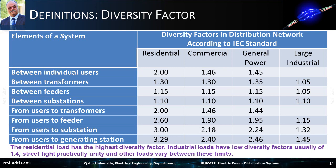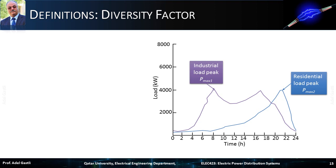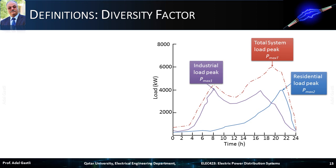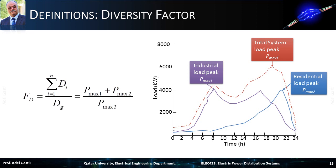Note that the more upstream you go, the higher the diversity factors. The residential load has the highest diversity factor. Industrial loads have low diversity factors, usually around 1.4; street lights are practically unity; and other loads vary between these limits. A graph illustrates different load curves for industrial and residential loads, which exhibit different peak loads at different times. The combined total system peak load seen from the distribution substation exhibits a different shape and peak load, and the diversity factor is calculated as the ratio of the sum of industrial and residential peaks to the total system load peak.